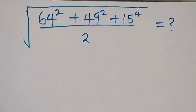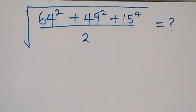Hello, you are welcome. How to solve this nice square root problem: we have square root of 64 squared plus 49 squared plus 15 raised to power 4, divided by 2.